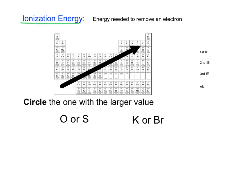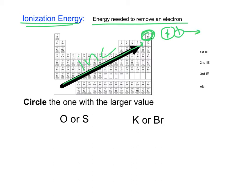Our next trend is ionization energy — that's the energy required to remove an electron from an atom. The general trend is we see an increase in energy as you head towards helium. The reason is that helium is a noble gas — they're already stable and don't want to lose any electron. Helium is really small, so the effective nuclear charge has a tight pull on its two electrons. There's also an increase in effective nuclear charge and a decrease in shielding, so it's going to take a lot of energy to remove one of helium's electrons.